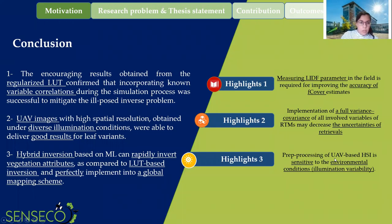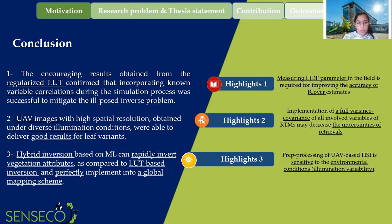To conclude our work: first, the regularized lookup table was able to mitigate the ill-posed problem when considering the variable correlation obtained from the ground measurement. Second, the UAV images were able to deliver good results even when images are taken under cloudy conditions. Third, the hybrid model based on machine learning was rapidly able to invert the vegetation attributes compared to the lookup table approach, making it suitable for generating vegetation maps on the global scale.